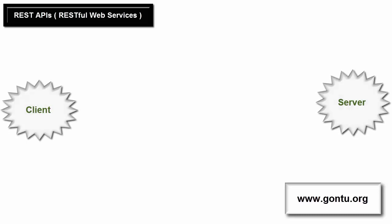REST says: in a client and server architecture, whatever data or functionality is kept at the server application which a client can access or modify is known as a resource. So there can be one, two, hundreds, thousands, or any number of resources present at the server application which a client has access to.